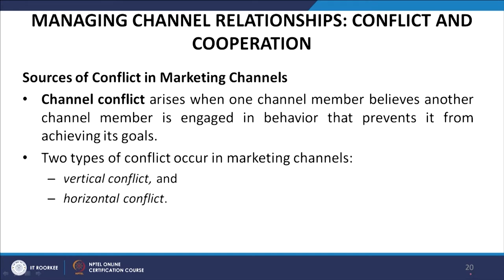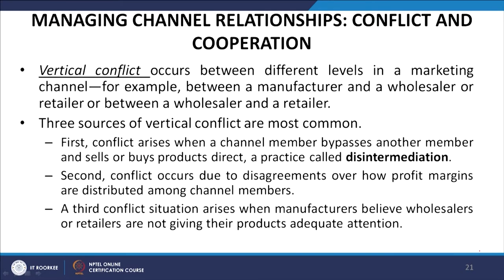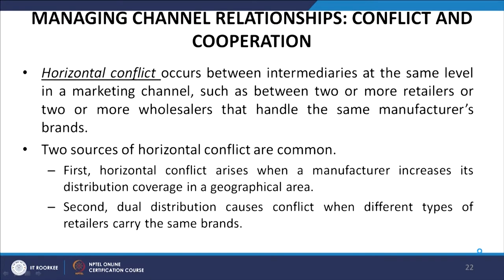There are two types of conflicts in marketing channels: vertical conflict and horizontal conflict. Vertical conflict occurs between different levels in a marketing channel — for example, between a manufacturer and a wholesaler or retailer, or between a wholesaler and a retailer. There are three common sources of vertical conflict: first, when a channel member bypasses another member and sells or buys products directly — a practice called disintermediation; second, disagreements over how profit margins are distributed among channel members; and third, when manufacturers believe wholesalers or retailers are not giving their products adequate attention.